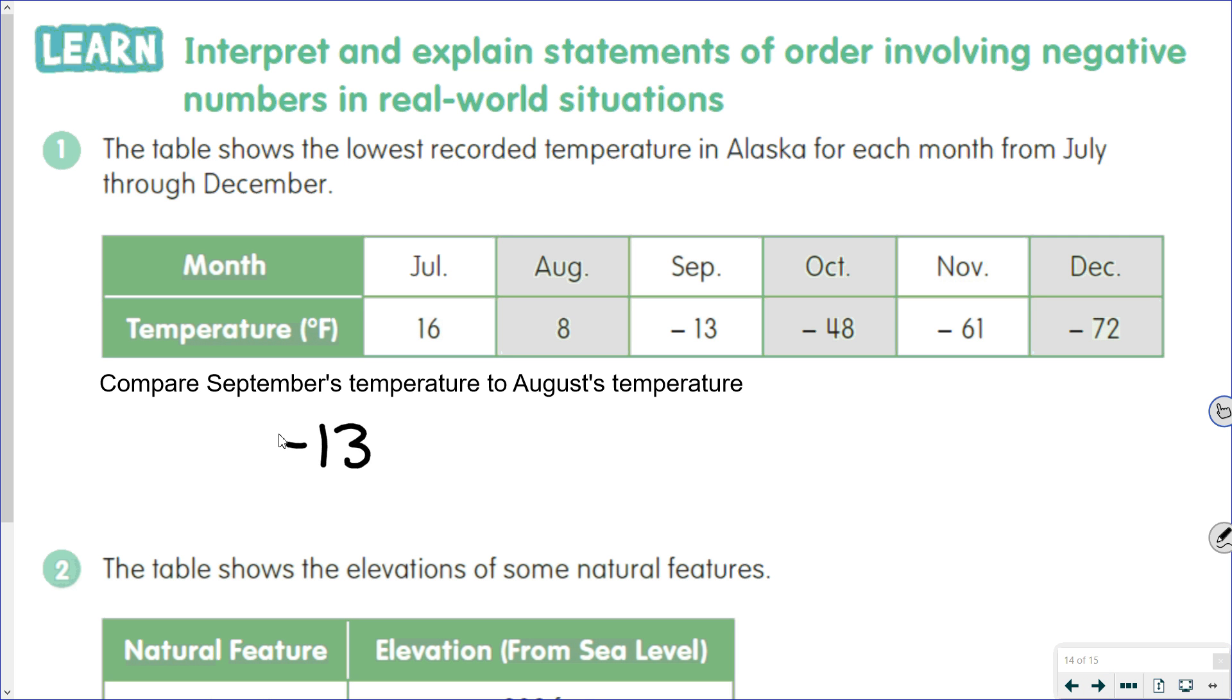Since August is listed second, we put that number second, and negative 13 is less than 8. Since it says compare September's temperature to August's temperature, we need to make sure we're using the temperatures and not the months.